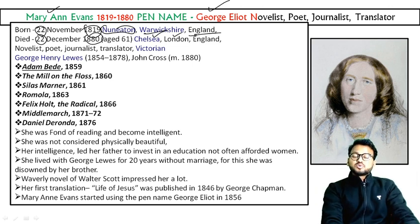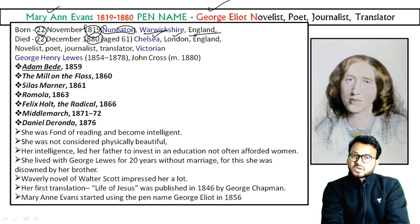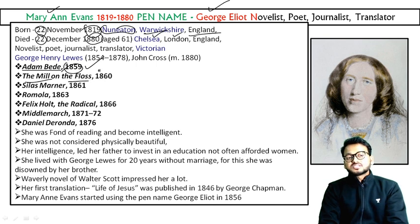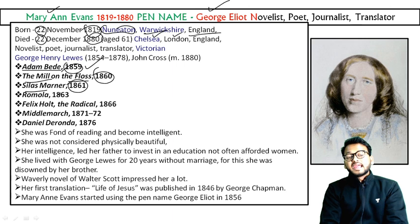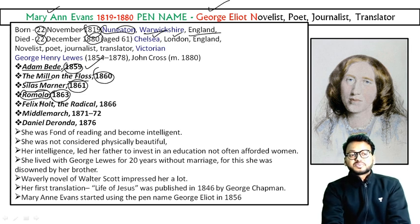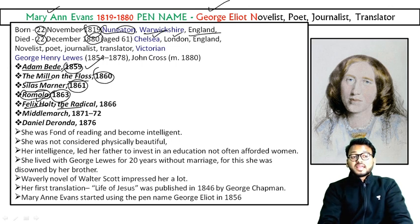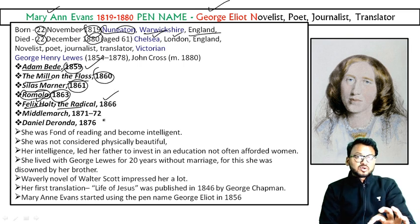She contributed a lot to Victorian society and depicted it in a clear-cut way in her novels. Her important novels include Adam Bede, which appeared in 1859, then The Mill on the Floss — which is also an autobiographical work — then Silas Marner, which appeared in 1861, then Romola in 1863, and Felix Holt the Radical, which appeared in 1866. These works are listed in chronological order.